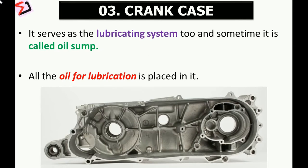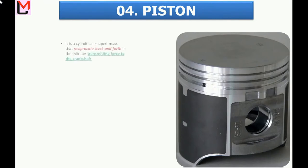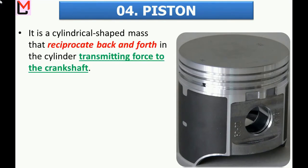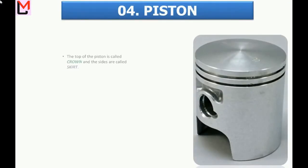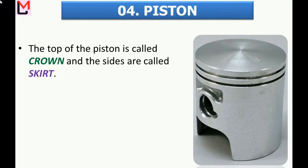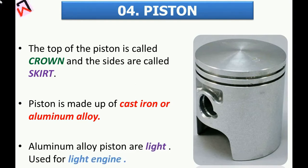Now we will discuss the piston. Here you can see the image of the piston. It is a cylindrical-shaped mass that reciprocates back and forth in the cylinder, transmitting force to the crankshaft — it is the prime mover in the engine. The main function of the piston is to give a tight seal to the cylinder bore and slide freely inside the cylinder. The top of the piston is called the crown and the sides are called the skirt. Piston is made up of cast iron or aluminium alloy; aluminium alloy pistons are light in weight and used for light engine vehicles.